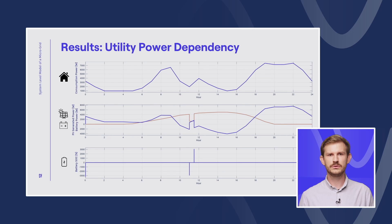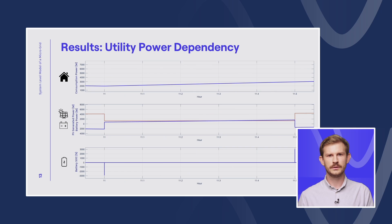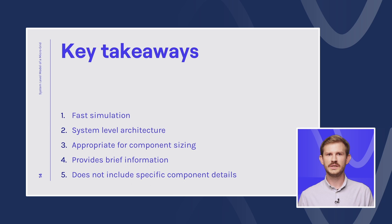And before the simulation, we also mentioned that we want to see how dependent we are on the utility grid. You can see on the last plot here that we need the utility power only when the solar panel shading occurs. The utility grid is needed only for a limited time, but we couldn't cover the shading without the utility grid. To conclude everything, we could see that we had a really fast simulation with our system level model, which included system level details and it was really appropriate for component sizing. We could see that we were able to cover the power needs of the three houses, but we couldn't exist without the utility power. And this model and simulation provided brief information for us, but it doesn't include specific component details. And for this, we have to dig deeper in our models.